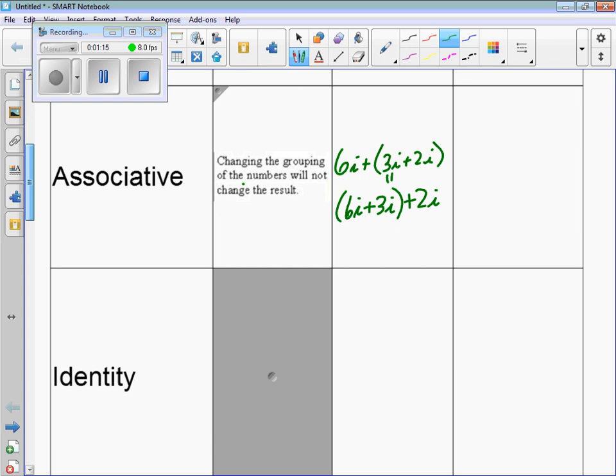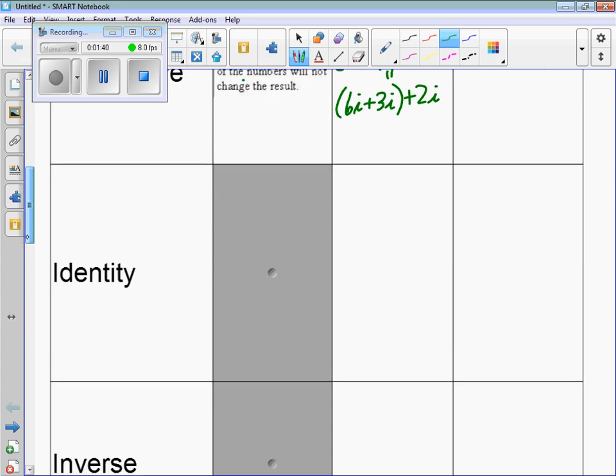With multiplication, it also works with multiplication. So 6i times 3i times 2i, it's the same thing as if I shift the parentheses to 6i times 3i and then times 2i. I'm just keeping the order the same but the parentheses are moving.